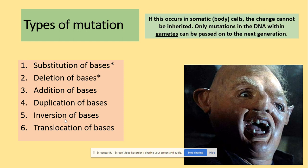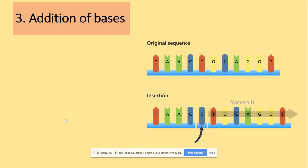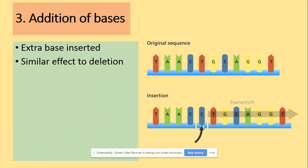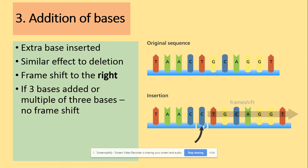Substitution and deletion were covered in Section Four, so we'll focus on addition, duplication, inversion, and translocation. Remember: if a mutation takes place in somatic cells, the change cannot be inherited, but if it occurs in gametes, it will be passed on to the next generation. Addition of bases is where an extra base is added to the original sequence, causing a frameshift to the right — similar in effect to deletion. If three bases are added, there is no frameshift, just an extra amino acid in the polypeptide.